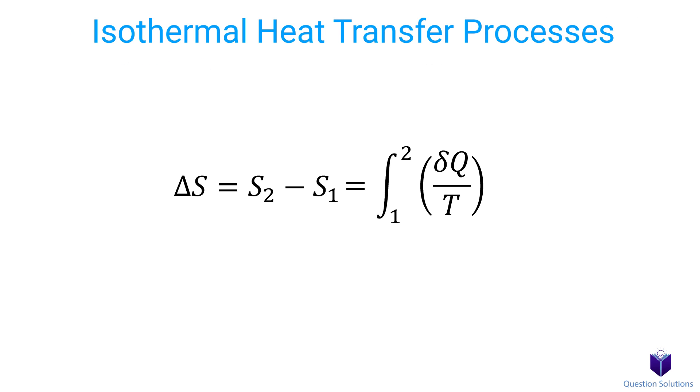In certain cases, where we have isothermal heat transfer processes, so that means the temperature doesn't change, we can simplify the equation to this. Here, T0 is the constant temperature of the system, and q is the heat transfer.